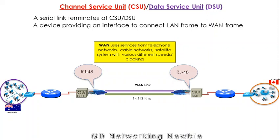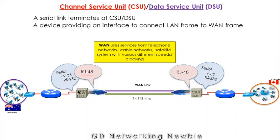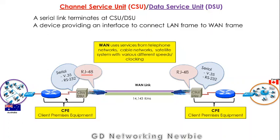To connect from WAN connectivity via the serial link, we use an RJ45 connector connected to the CSU/DSU. From the CSU/DSU to the router, we use serial connections like V.35 or RS-232. This set of devices is also known as CPE — Customer Premises Equipment — because it is normally the responsibility of the client to arrange for and maintain these devices.